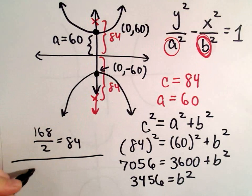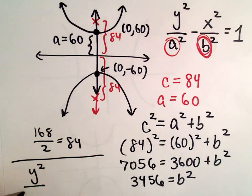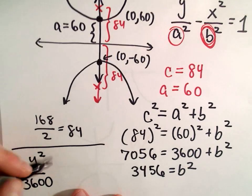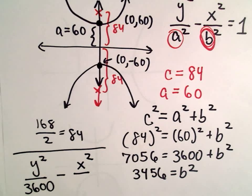So it says we're going to have y squared over a squared. Again, a was equal to 60. So 60 squared we said was 3600.